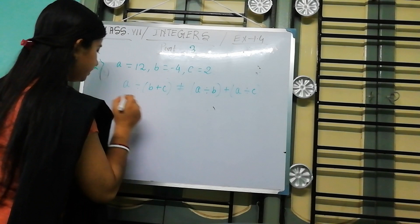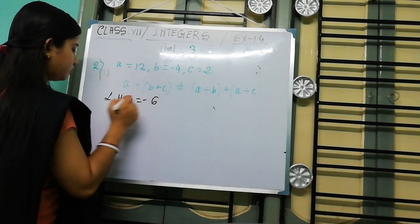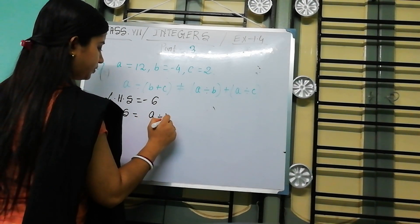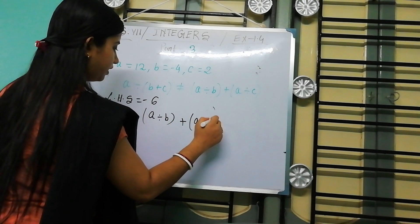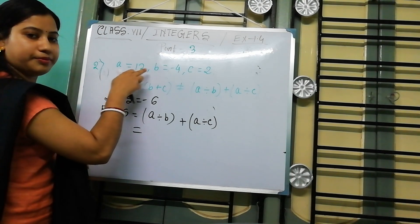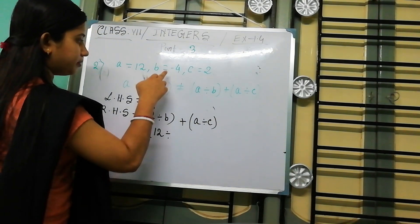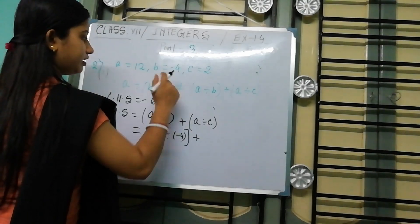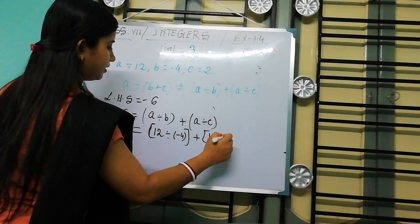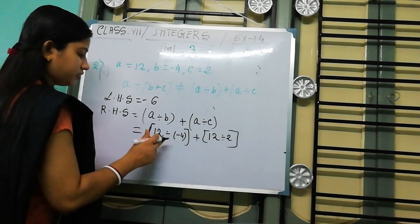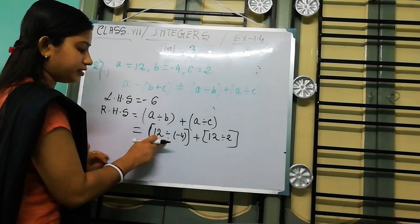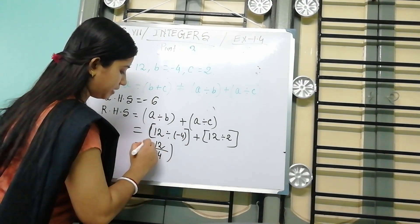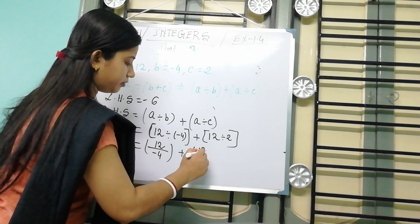LHS equals minus 6. Now find RHS. RHS equals A divided by B plus A divided by C. Now put the values: A equals 12 divided by B, that means minus 4, plus A that means 12 divided by C, which is 2.